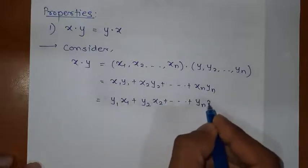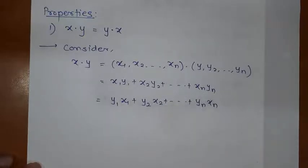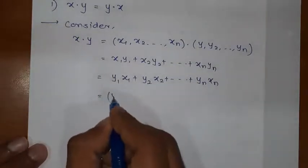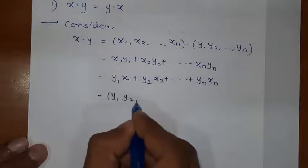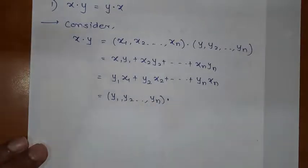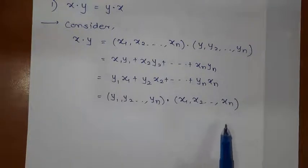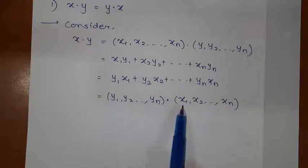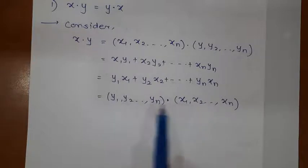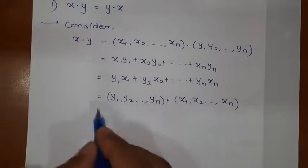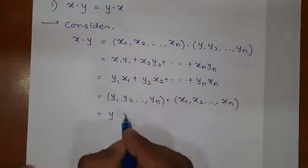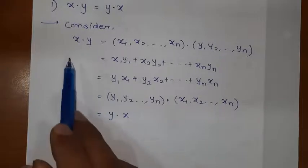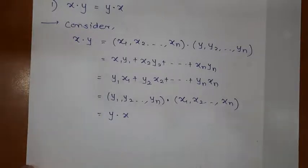You can write Yn into Xn. You can interchange since in case of multiplication it is possible. So this is nothing but Y1 into X1 plus Y2 into X2 and so on — which is Y dot X. Therefore we proved X dot Y is the same as Y dot X.